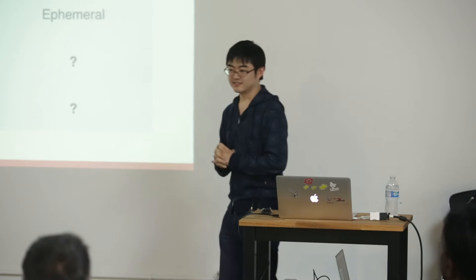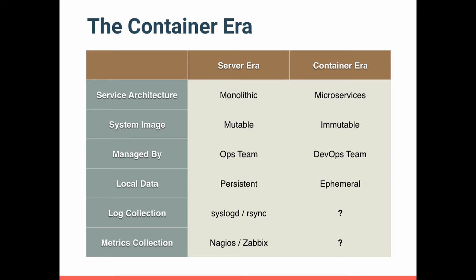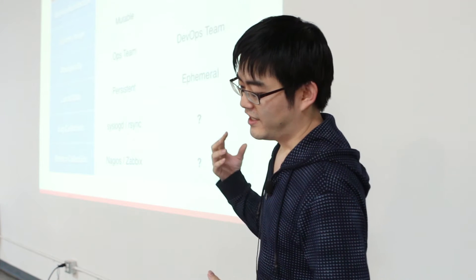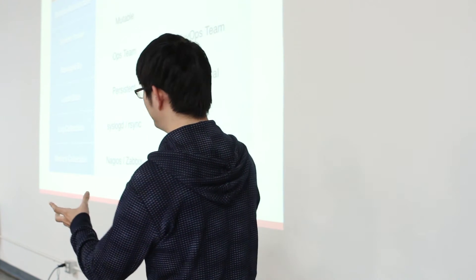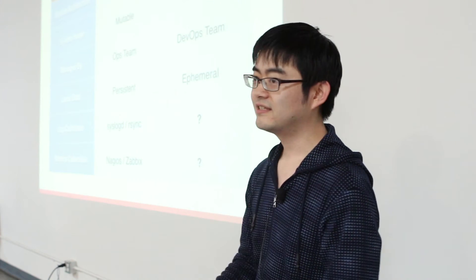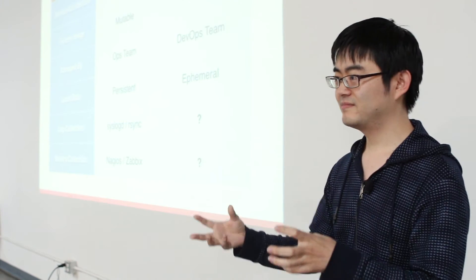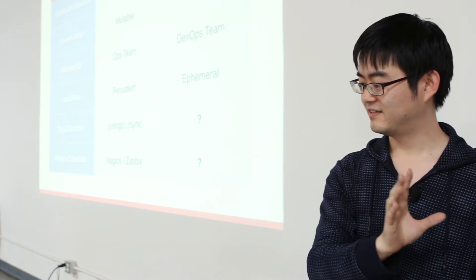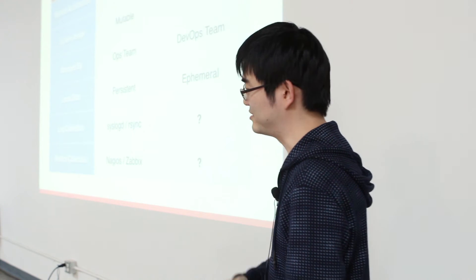Let's go into the main topic. We are in the container era. It was in the server era where the service architecture was monolithic, but it's going to change to microservices. In the server era, the system image was mutable — you could log in there and edit. But in the container era, that doesn't work. System images should be immutable. That was operated by the Ops team, but now it should be operated by the DevOps team, because you can create an immutable system image, develop and debug it on your local machine, and that immutable system just goes to a server. That's amazingly better than the server era because you don't have to configure a server at all.